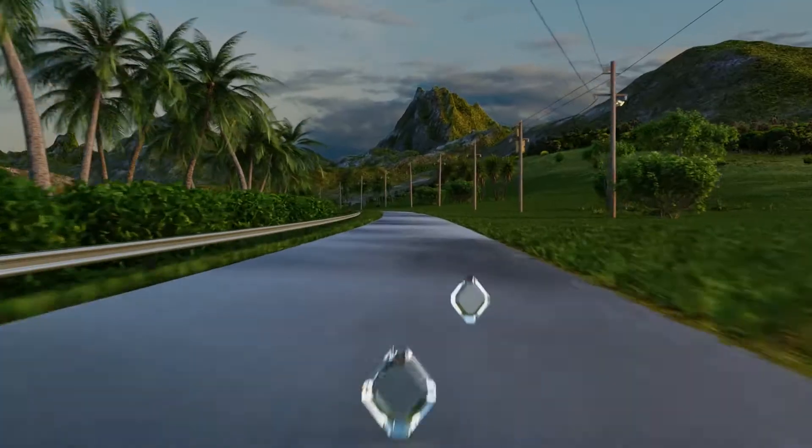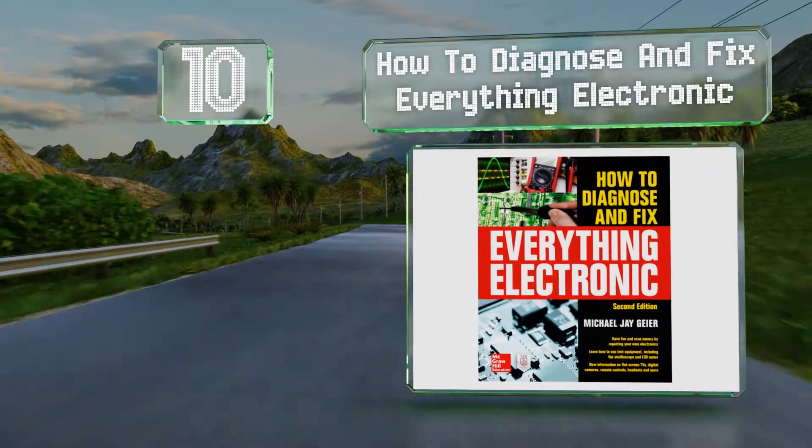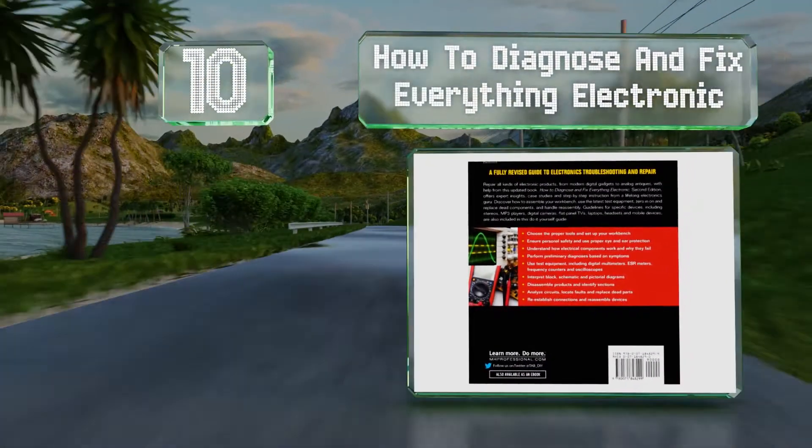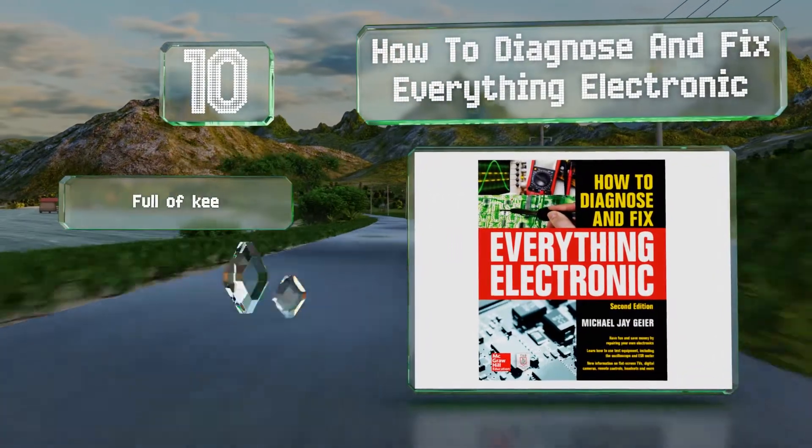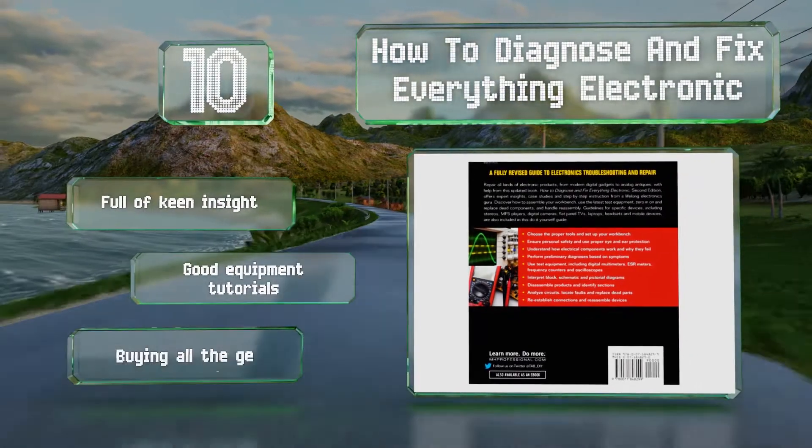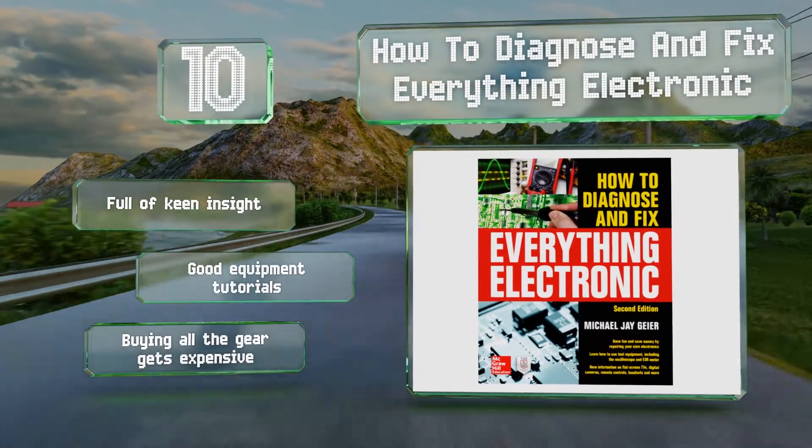Starting off our list at number 10. Often the best way to learn a trade is to roll up your sleeves and engage in the kind of hands-on education promoted by How to Diagnose and Fix Everything Electronic. It'll help you set up a workstation and dig into any old or broken devices you might have lying around. It's full of keen insight and includes good equipment tutorials.